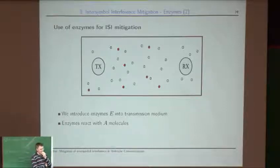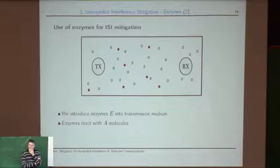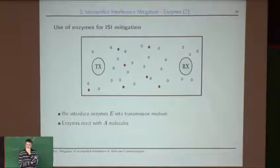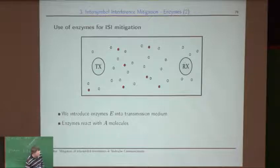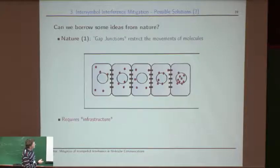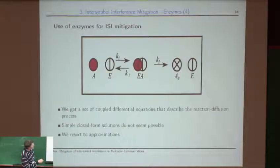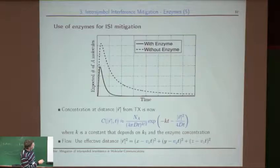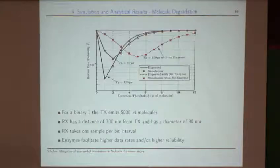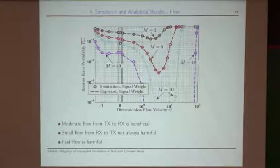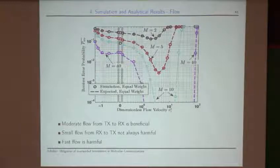Question on mean first passage time: What is the average travel time from source to receiver for the example given? The speaker notes the bit interval is 120 microseconds but cannot recall exact diffusion coefficient values — typical values for blood at body temperature were used. The flow axis is normalized, with the diffusion coefficient embedded in the normalization.